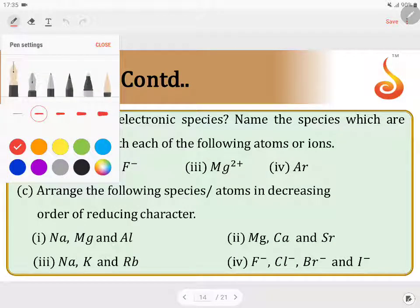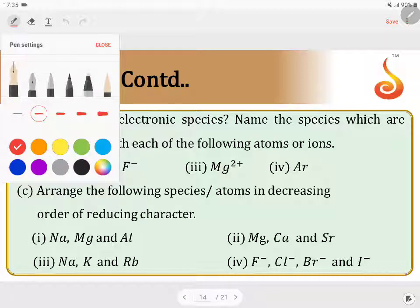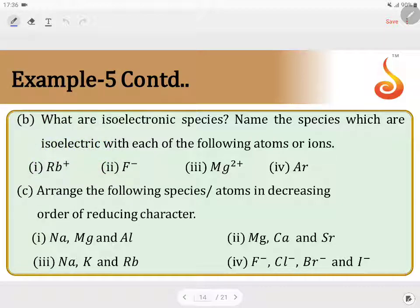Then, if you consider the second part of the question. What are isoelectronic species? And name the species which are isoelectronic with the following atoms or ions. Isoelectronic species means atoms or ions having same number of electrons.